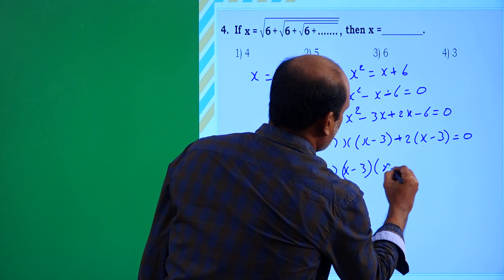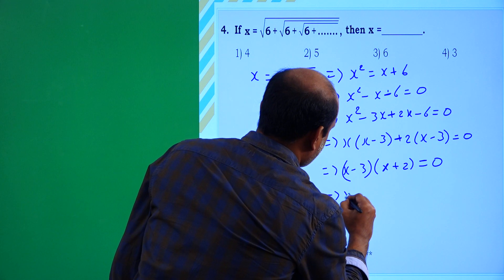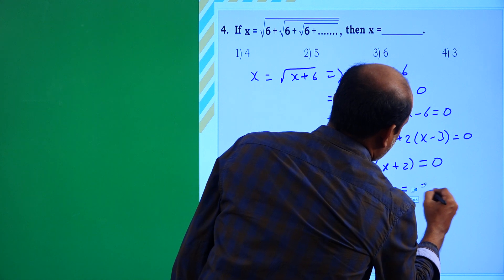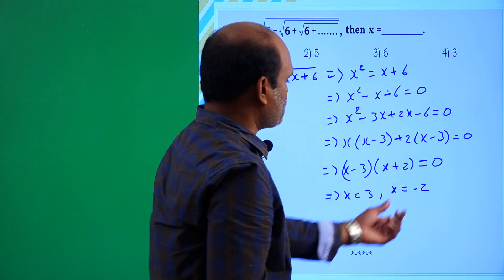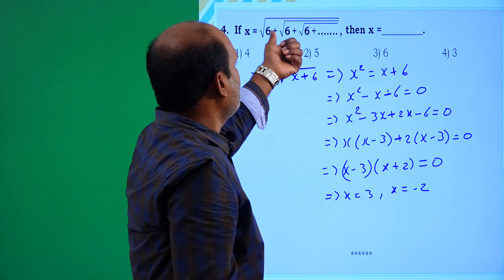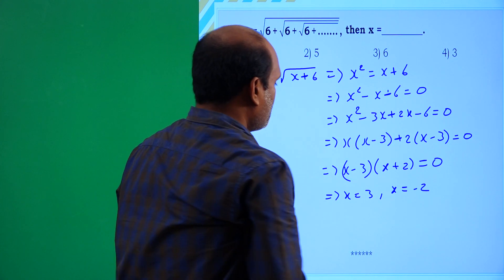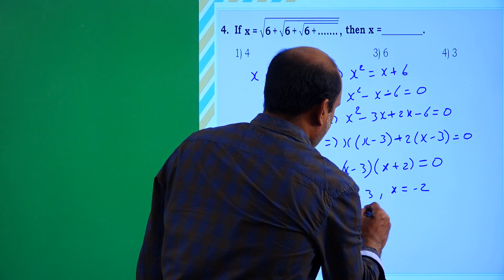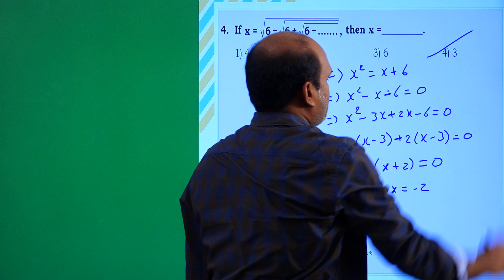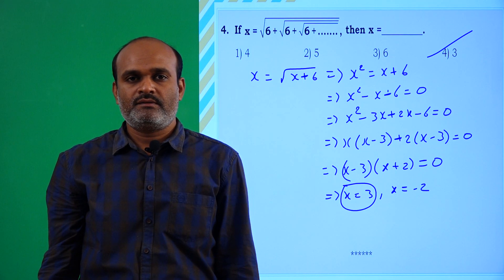This gives x = -2 or x = 3. Since x = -2 is a negative value and negative values don't exist under a square root in the real number system, the correct answer is x = 3, which is the fourth option. Thank you students.